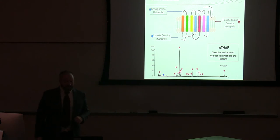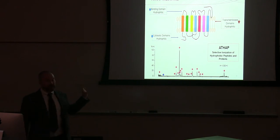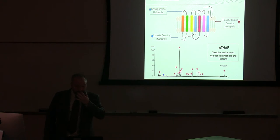And this is an example just kind of showing the transmembrane domains, and being able to selectively ionize the hydrophobic peptides. So you can see, the stars are representing the hydrophobic peptides, and the circle is more of the hydrophilic. So you can see very few hydrophilic peptides are being detected there.